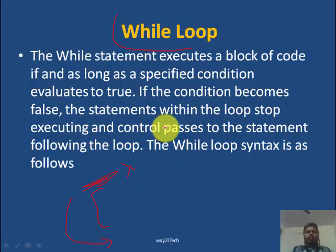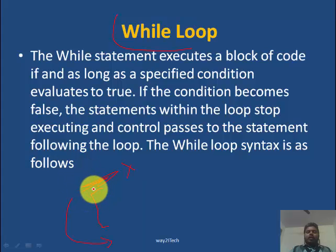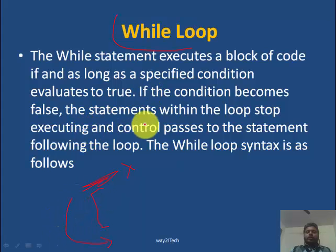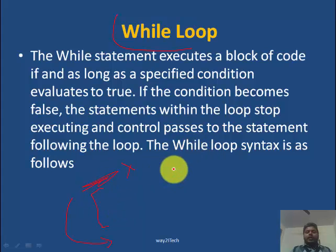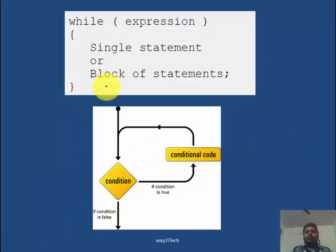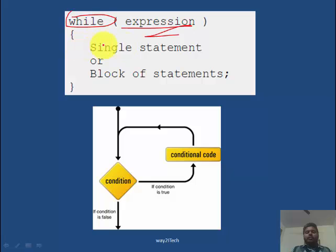If the condition becomes false, the statements within the loop stop executing and control passes to the statement following the loop. The while loop syntax is as follows: while(condition) — the condition can be any expression — followed by a single statement or block of statements.